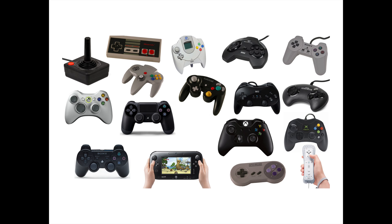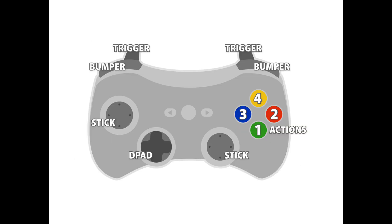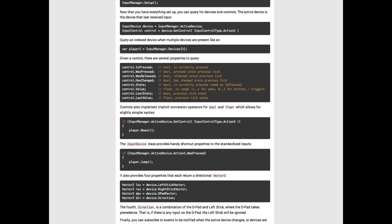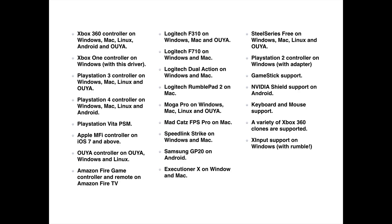InControl tries to solve this problem. We define a set of standard controls picked from the controllers of major consoles: two triggers, two bumpers, two analog sticks, a D-pad and four action buttons. InControl automatically maps many common controllers to these controls where possible, also mapping any non-standard controls, and makes them available through a simple and powerful API written in C-sharp. Many controllers are currently supported, including the major controllers you would expect, and more controllers and platforms are being added all the time.